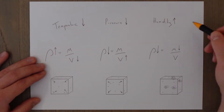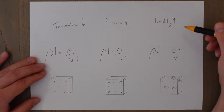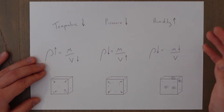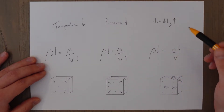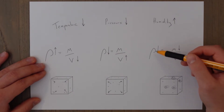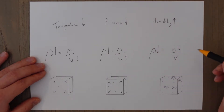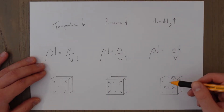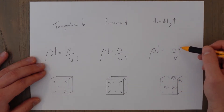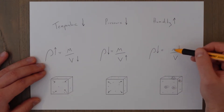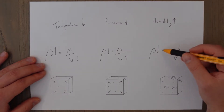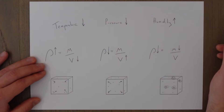The other thing that changes density is humidity. The more water in the air, the less dense the air is — so as humidity goes up, the air becomes less dense. This is because a water molecule weighs less than air molecules. So if we replace air molecules with water molecules, we have a lower total mass being divided by the same volume, which means the density goes down.